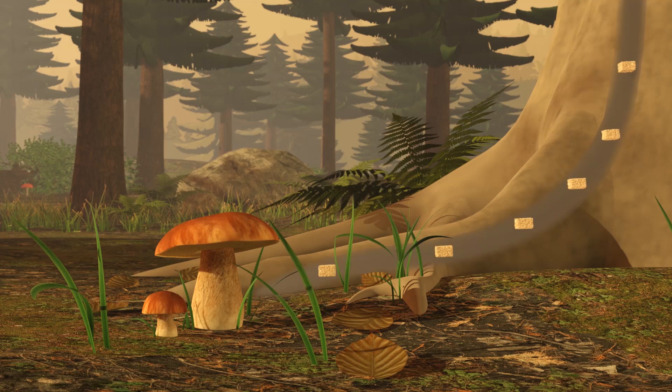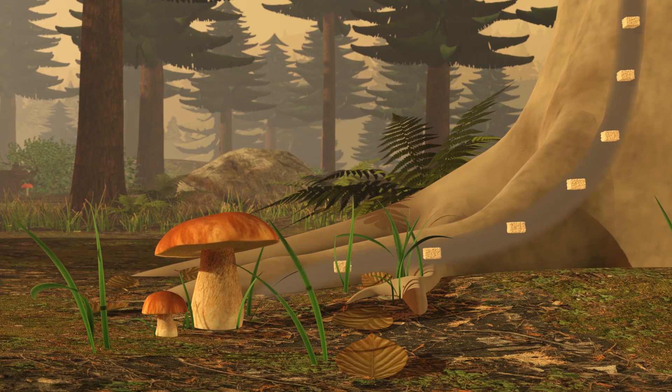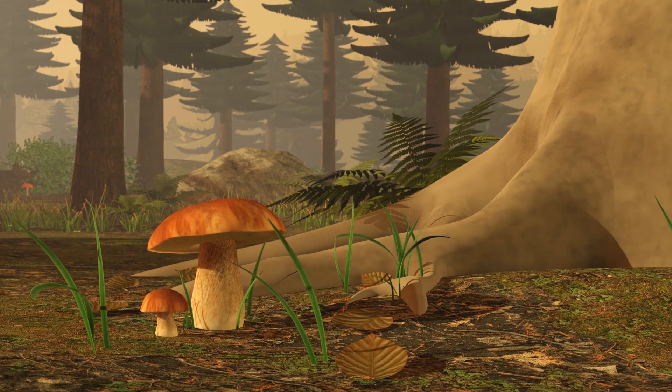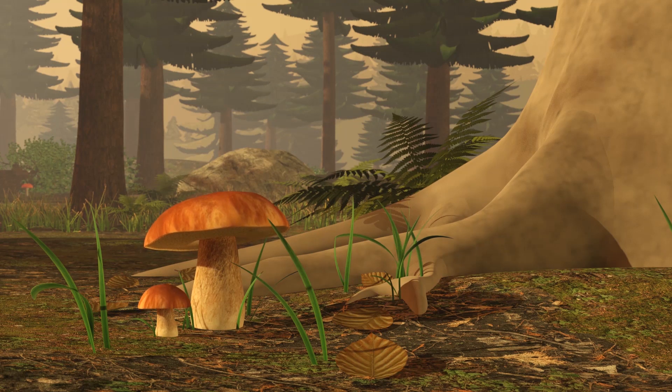This form of symbiosis is called mycorrhiza, and there are advantages for both partners. The fungi helps the tree to absorb water, and in return, it gets dextrose to survive and grow.